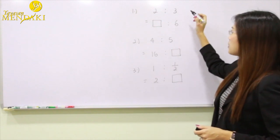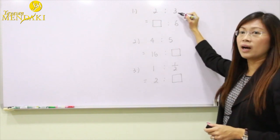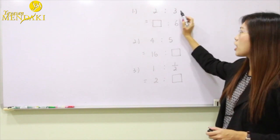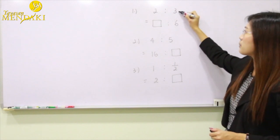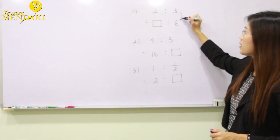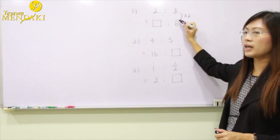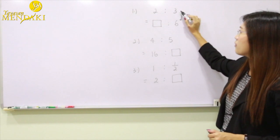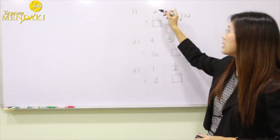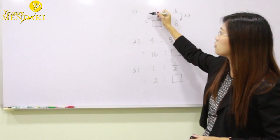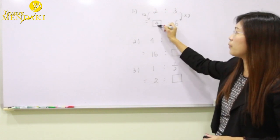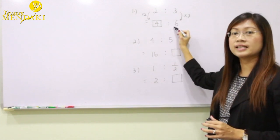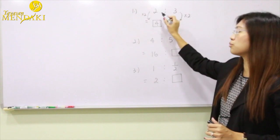In example one, we have a ratio of two is to three. To change it into an equivalent ratio, we multiply the three by two to get a value of six. We do the same for the other side: two times two gives us four. So the new ratio four is to six is equivalent to two is to three.